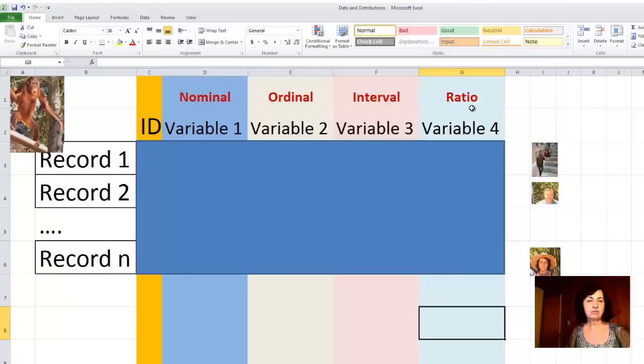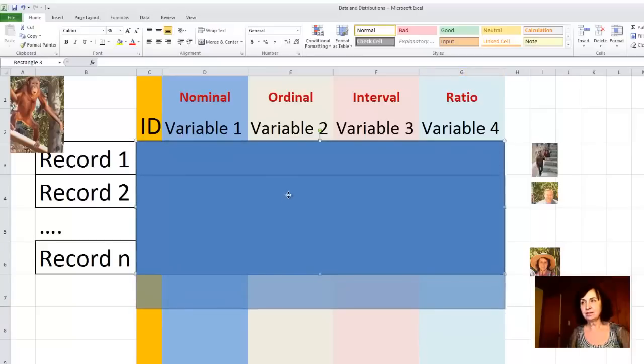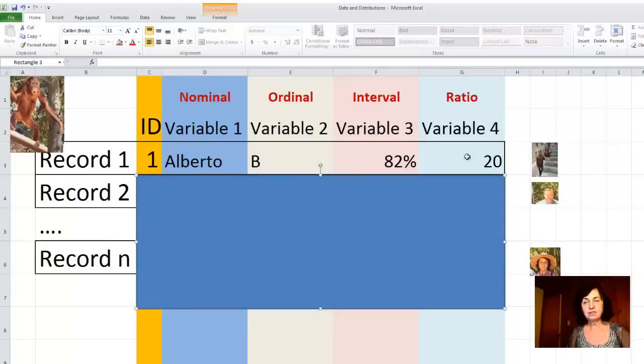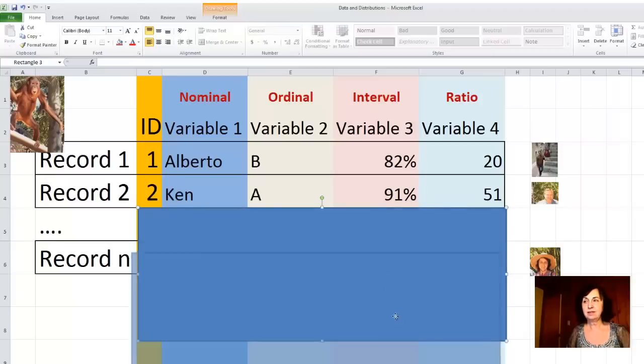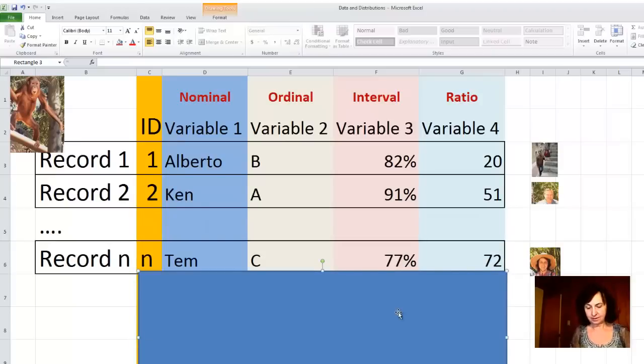I'll use four different levels of measurement for these variables. The first record is for one individual in the survey. I have the ID: Alberto, and his grade is B. Interval type data is his score as a percent, and his age is 20. Then I have Kenny, who has grade A, and finally STEM, whose grade is C.